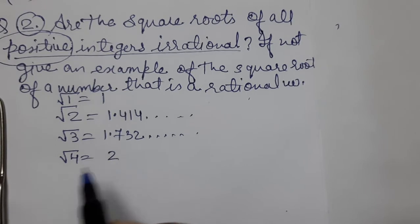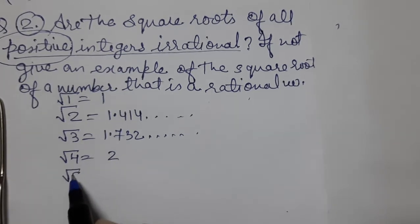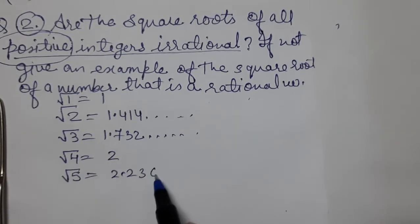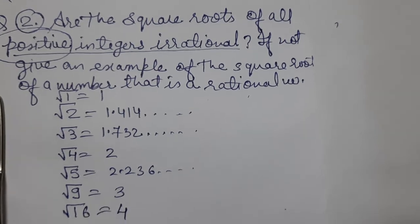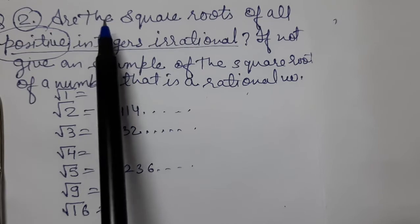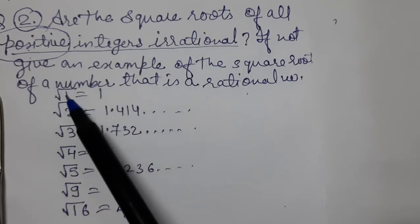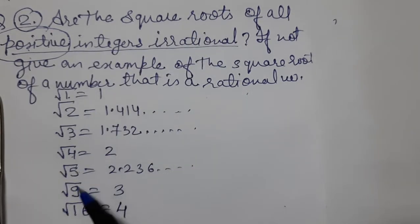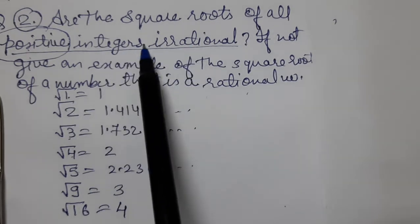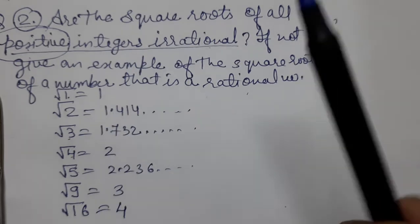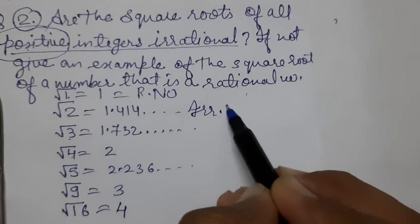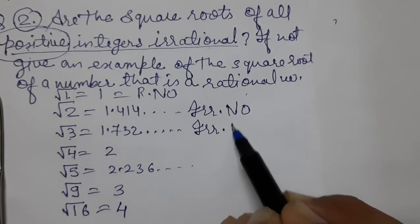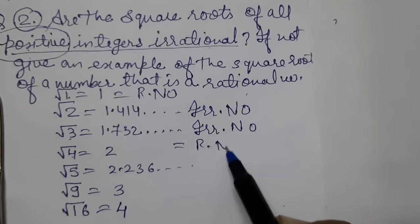√4 is a perfect square giving 2. √5 is 2.236. √9 is 3. √16 is 4. Now the question: are all square roots of positive integers irrational? Looking at these numbers — √1, √4, √9, √16 are rational numbers.